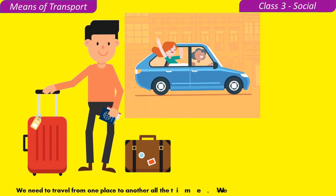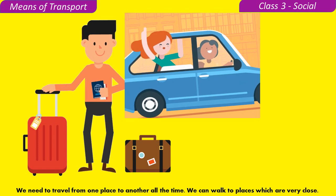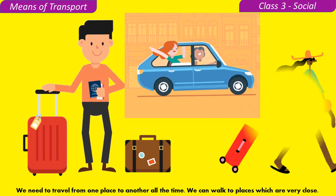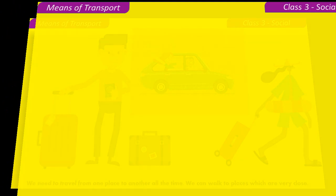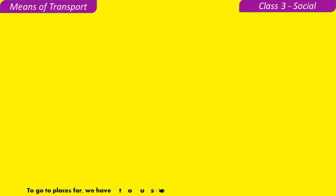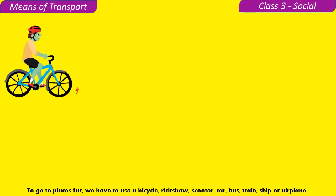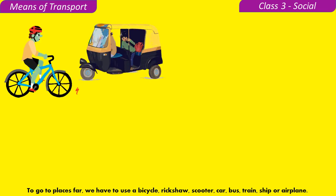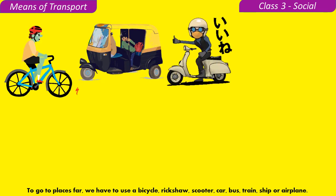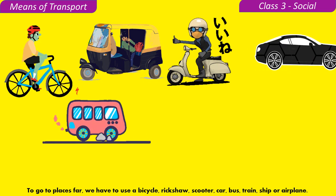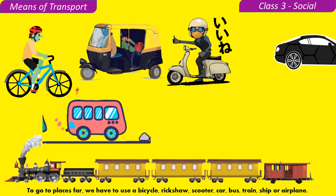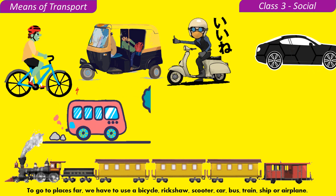We can walk to places which are very close. To go to places far, we have to use a bicycle, rickshaw, scooter, car, bus, train, ship, or airplane.